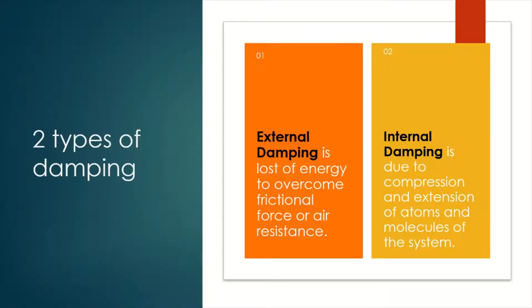There are two types of damping because there are two ways that the energy can be lost. One is called external damping. External damping is a loss of energy to overcome frictional force or air resistance. As the pendulum oscillates, the pendulum bob is brushing against the air molecules — that is air friction, air resistance — so energy is lost as heat. This is called external damping.